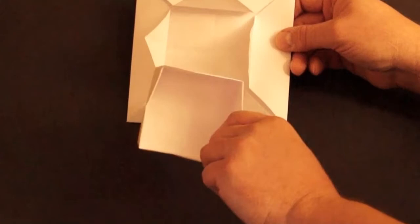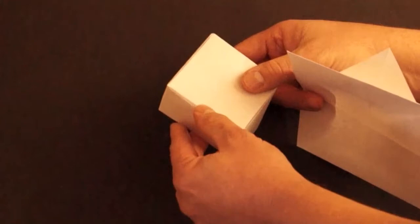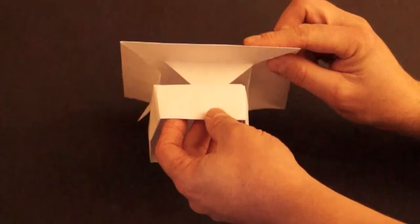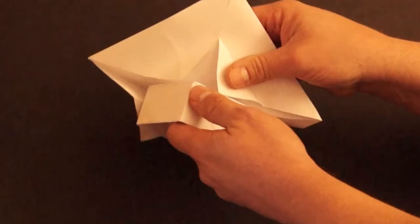Turn it so that it's upside down. Each side has a pocket. Take the tab from this piece and stick it into the pocket. Repeat on all four sides.